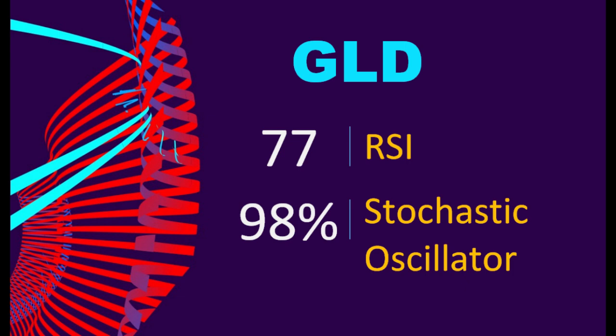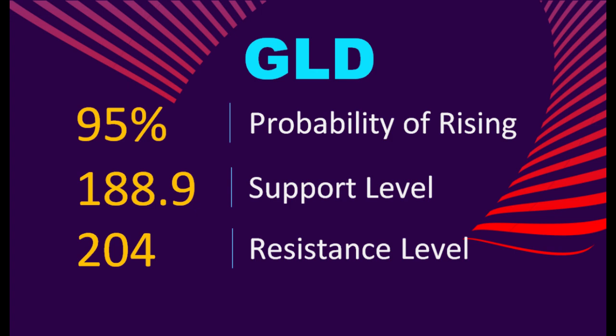An overbought condition occurs when a stock's price rises too fast and too high in a short period of time, and can be a sign that buying pressure has exhausted. Trend Outlook: The probability of GLD share price rising is 95%. When the probability of rising is higher than 50%, it means the stock has a higher chance of rising; if lower than 50%, the probability of falling is high. Combining multiple technical analysis indicators, GLD has five bullish signals and three bearish signals.